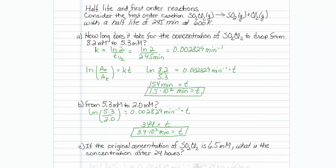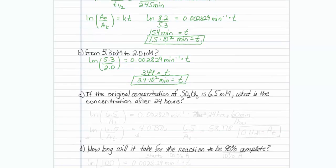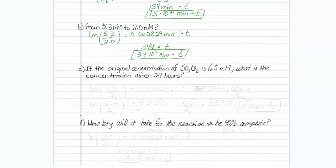Part c. If the original concentration of SO2Cl2 is 6.5 millimolar, what is the concentration after 24 hours? All right, here we go again, same formula. Natural log, we know we start at 6.5 millimolar, and we're trying to solve for the concentration at time T. So I'll put in A, which represents some concentration.